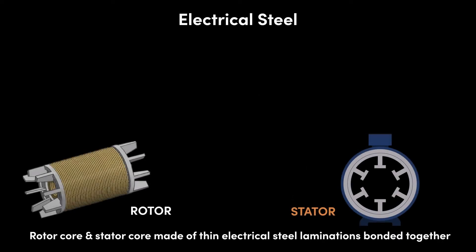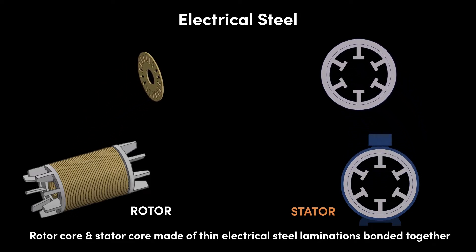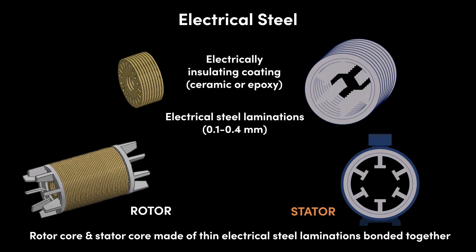The main body or core of both the rotor and the stator is made of a special type of steel called electrical steel, also known as silicon steel. Rather than being made of solid monolithic blocks, the electrical steel rotor core and stator core are made up of thin disks called laminations, usually between just 0.1 and 0.4 mm in thickness, which are coated with an electrically insulating coating of either a ceramic or an epoxy resin, and then bonded together. So what is electrical steel? What is its purpose? Why is it used in the form of thin laminations? And why are the laminations coated with an electrically insulating coating?